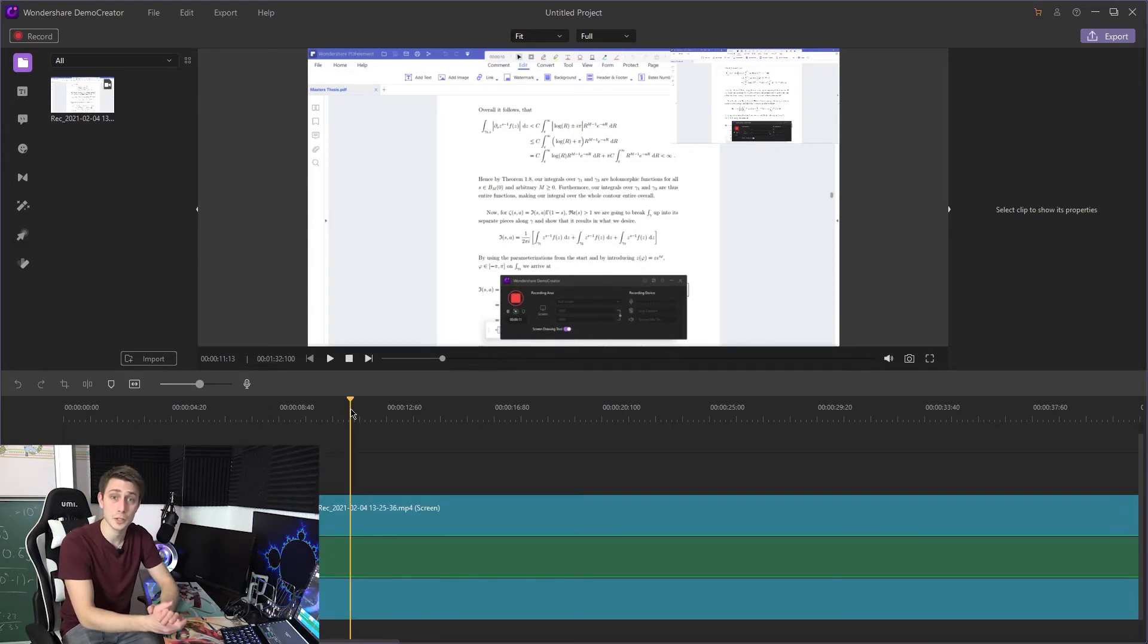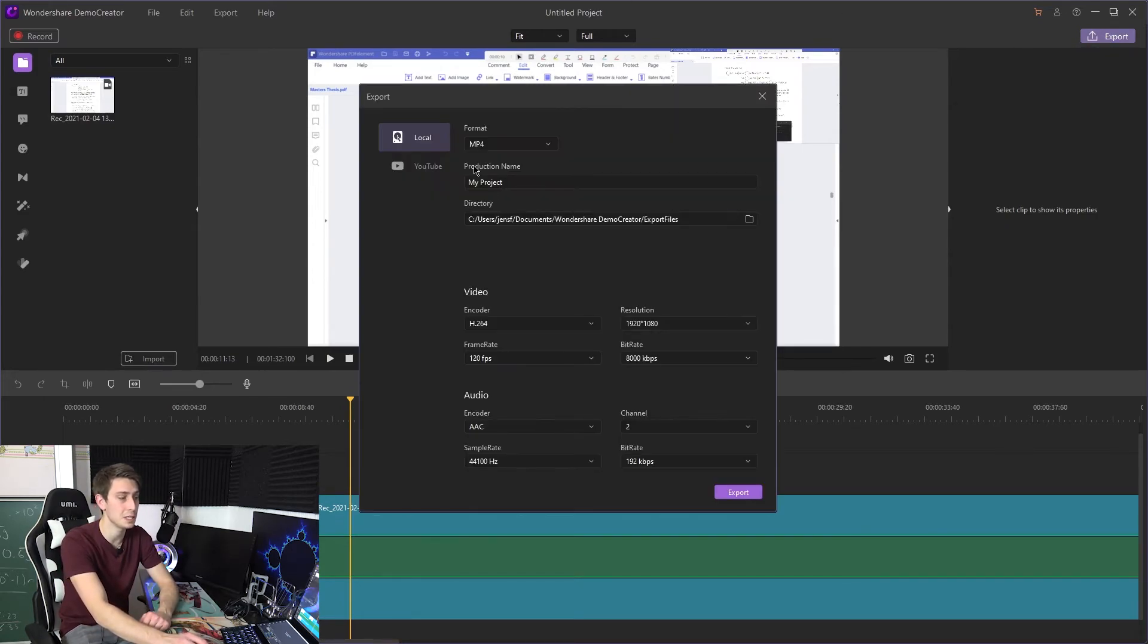Once you're done editing you can just start the regular exporting process by clicking export up here. You can either share it on YouTube immediately or you can save it locally and upload it to another part of the internet for example Vimeo or your university's homepage or something.